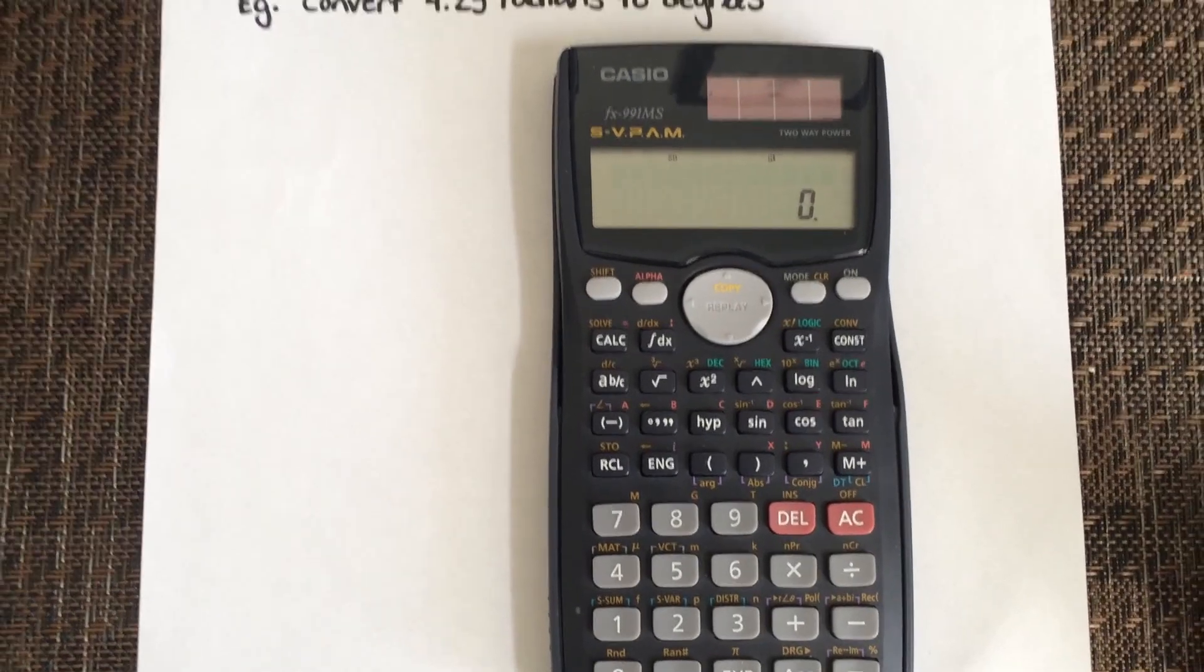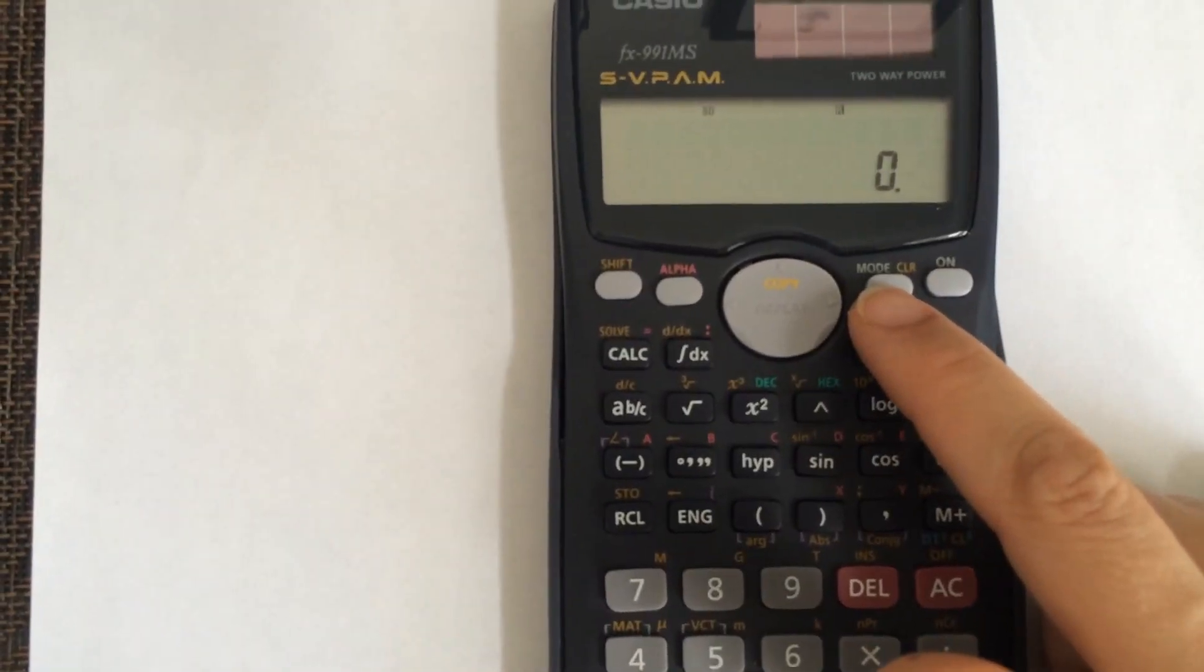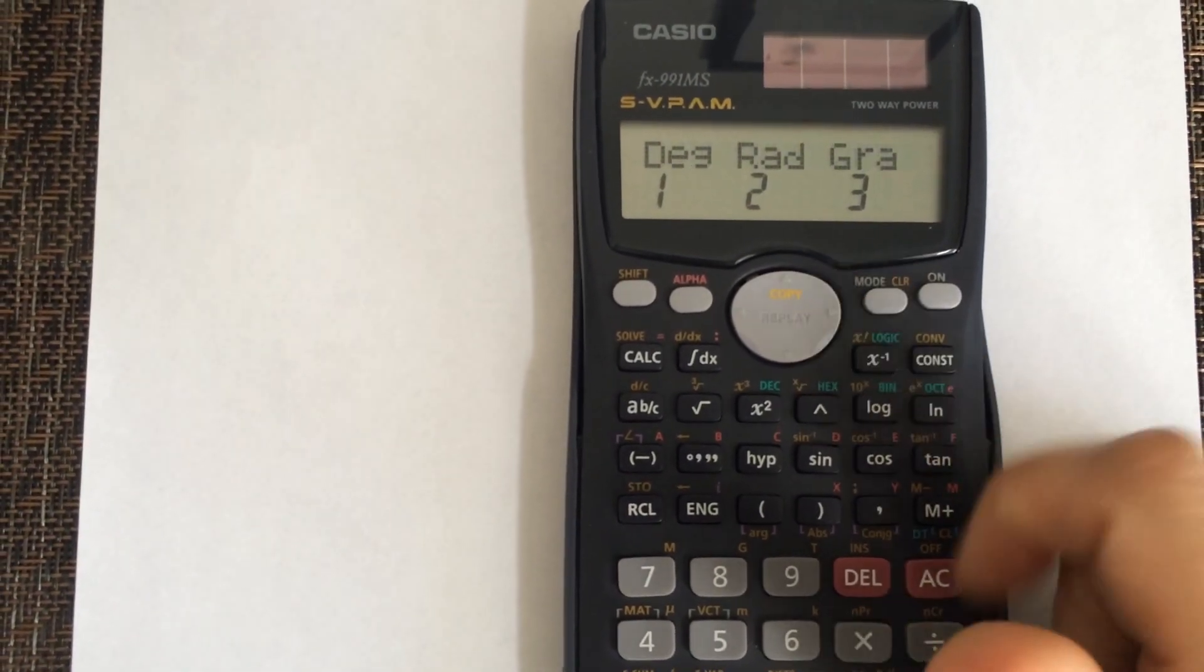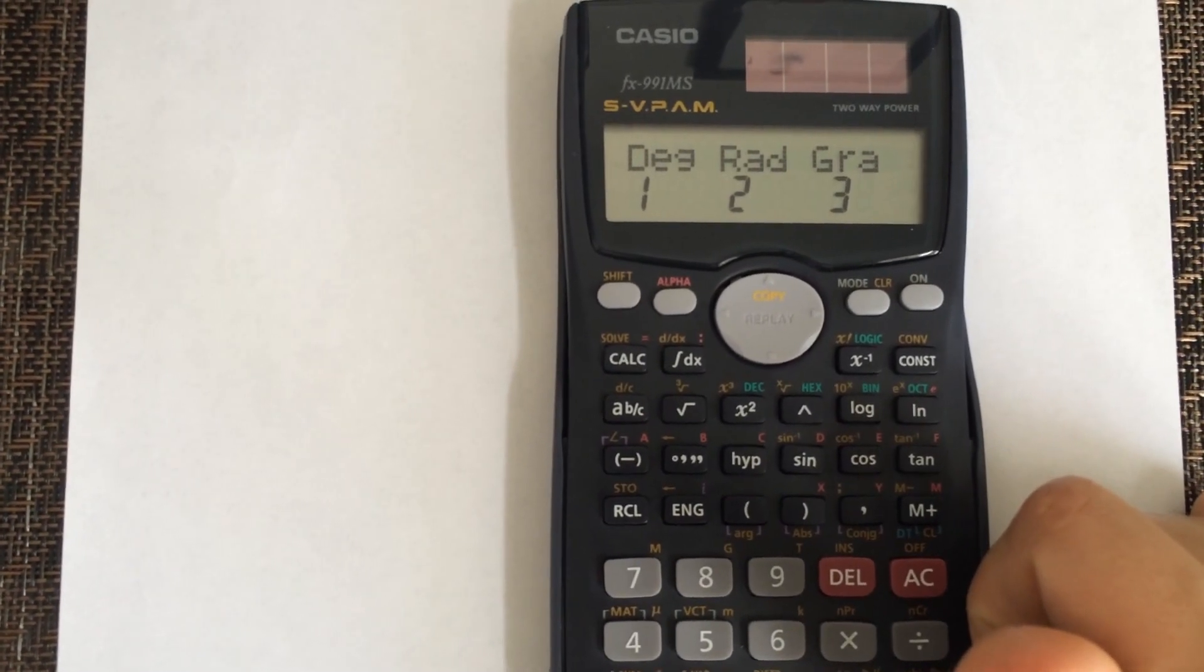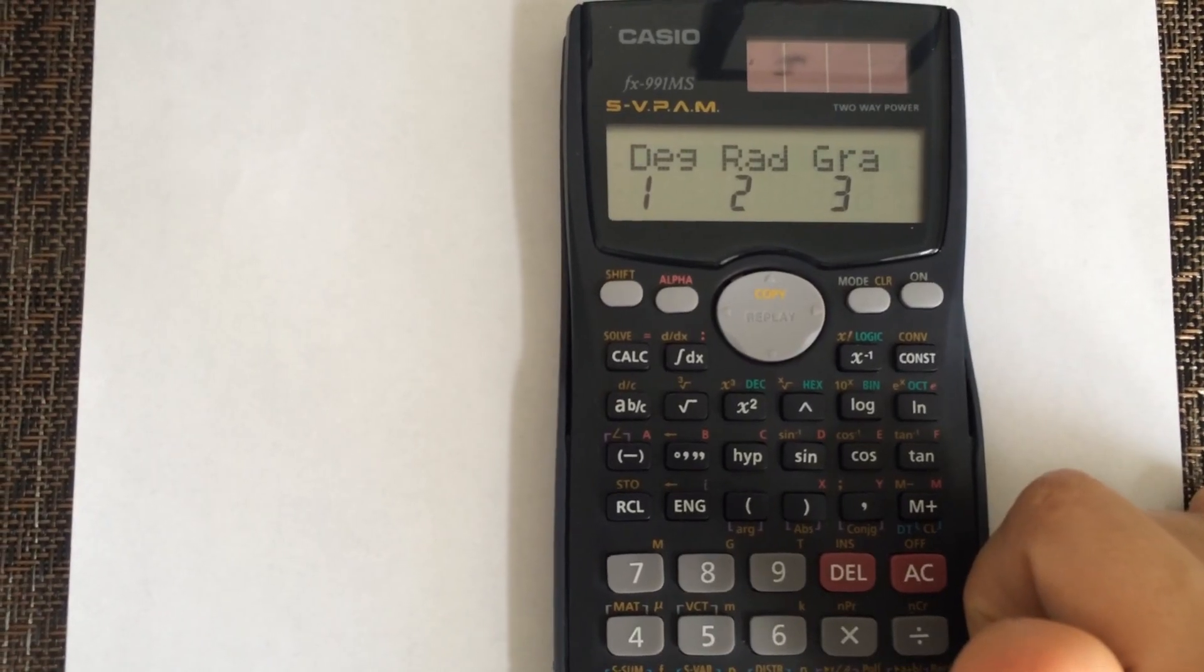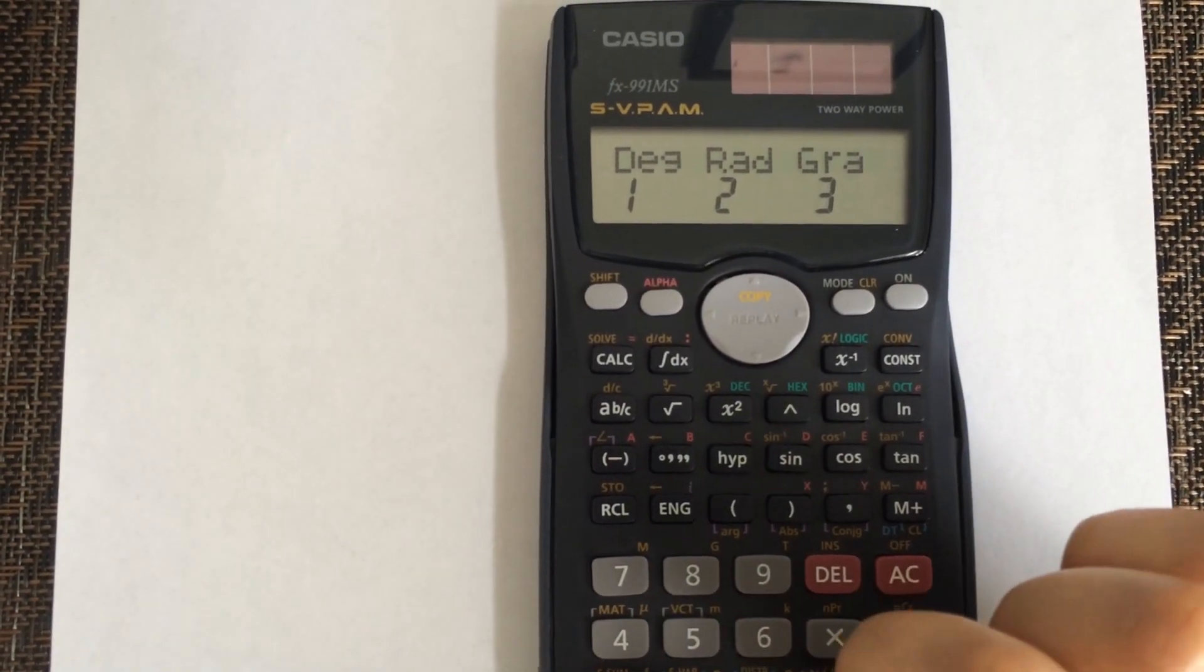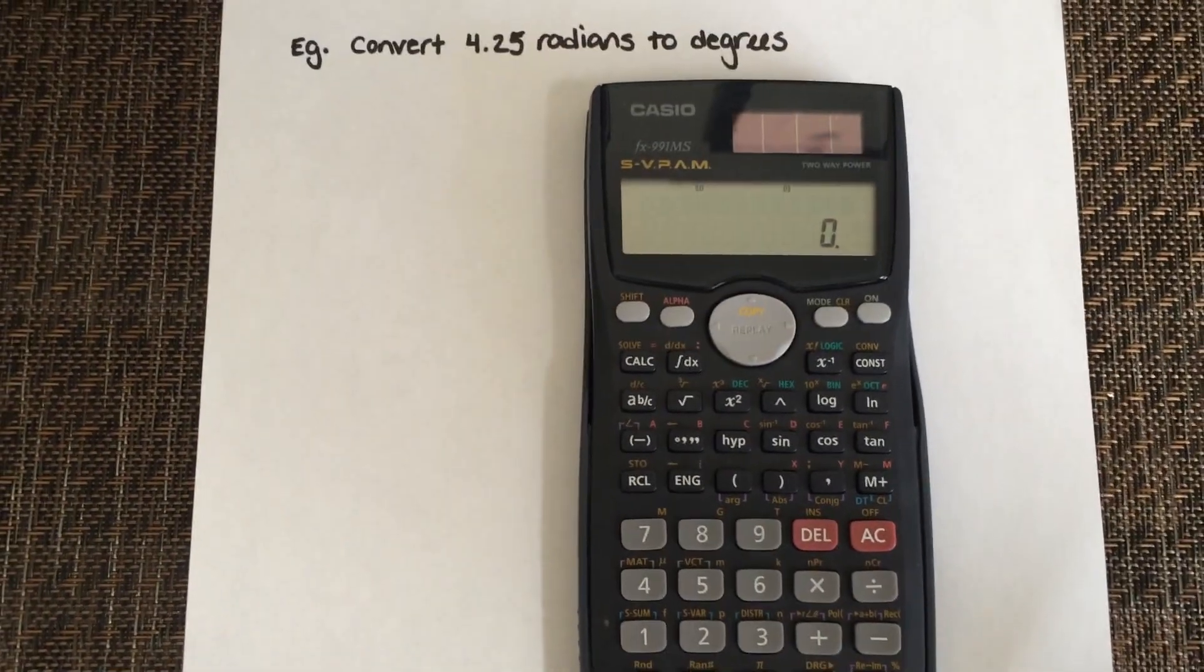On your calculator, first thing you want to do is get into the correct mode. You see the mode button here, select it four times until you see degree, rad, and grad. You want to change it to degrees because that's what we want our final answer to be in.